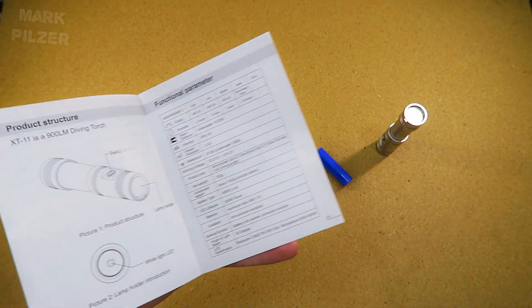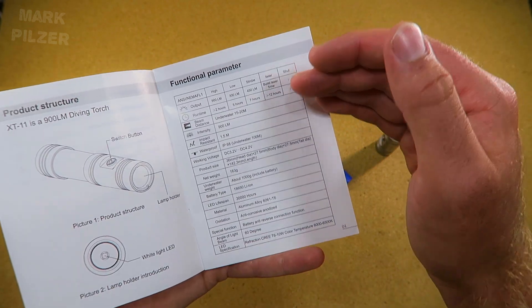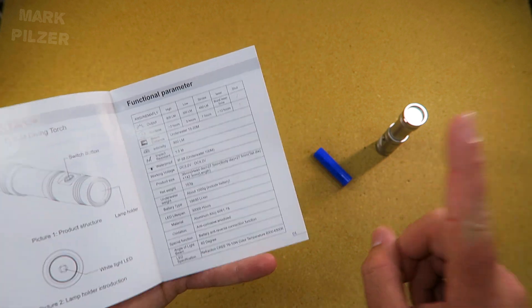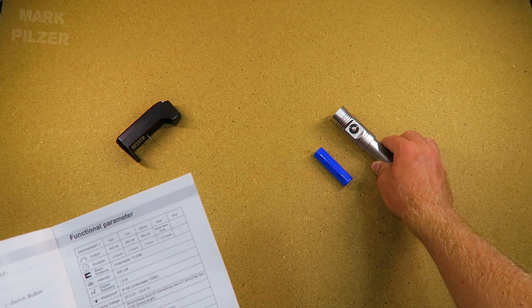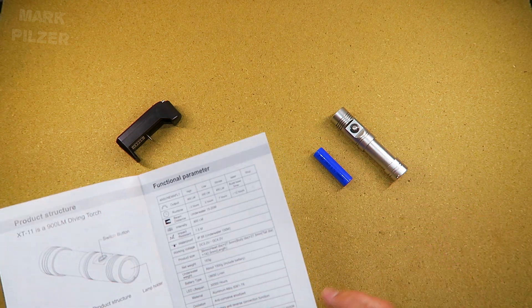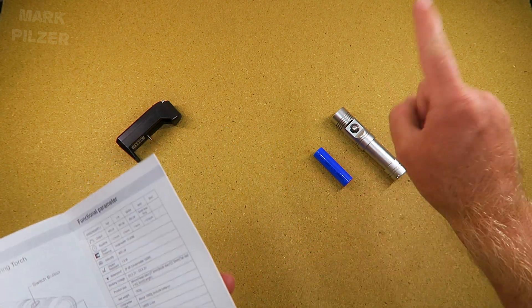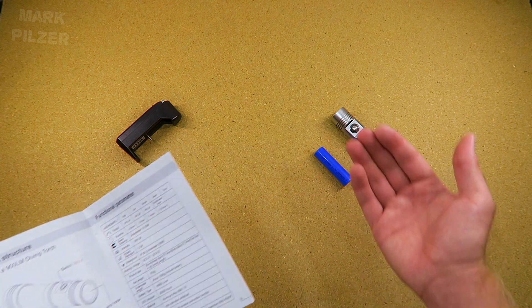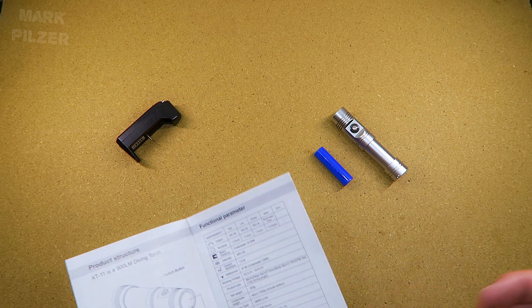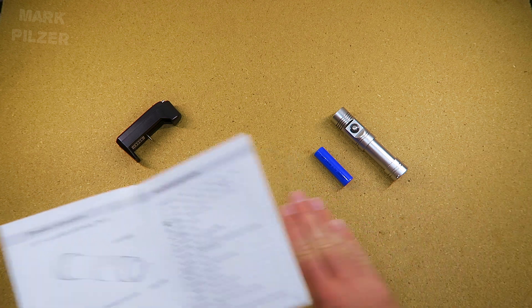It runs one 18650 battery, and this is all we need to know. One more thing which I like a lot about the light is on top of having a power indicator, it has over-discharge protection for the battery. This means you can use any kind of battery, even non-protected cells, and it will protect the cell. In case the voltage gets too low, it will just shut it off.